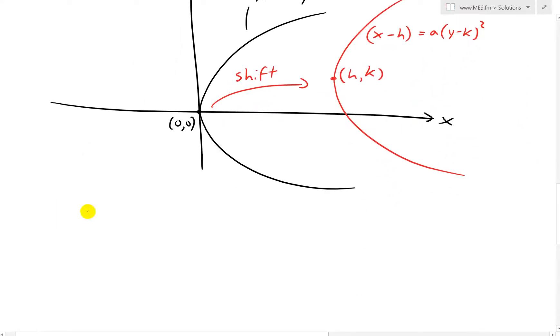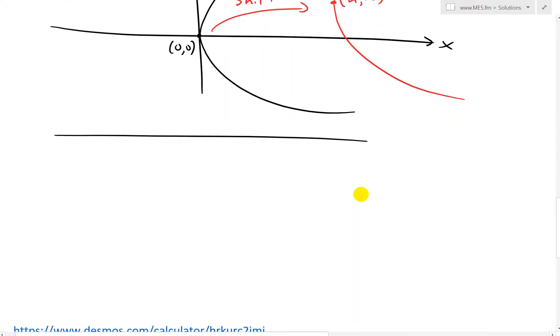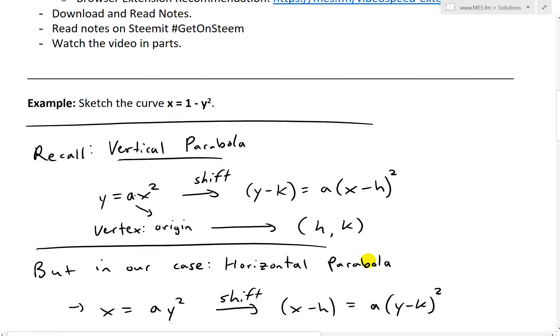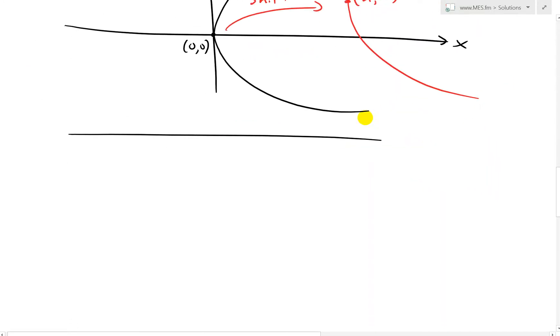So this is the exact same thing as for the vertical, but now we have a horizontal look. So I just wanted to review that, just to follow this methodology pretty strictly. And now what we could do is look at our equation here. So x equals 1 minus y squared.